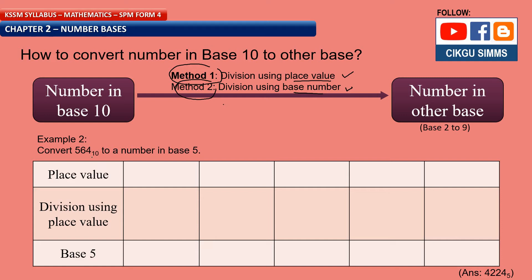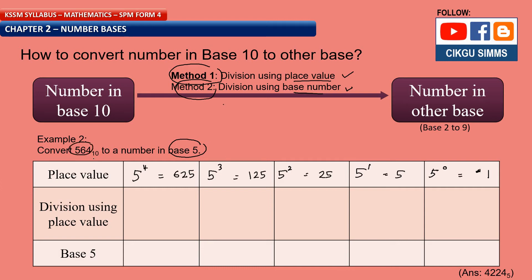For method 1, we need to write the place values first. We want to convert to base 5, so we write the place values: 5 to the power of 0 is 1, 5 to the power of 1 is 5, 5 to the power of 2 is 25, 5 to the power of 3 is 125, 5 to the power of 4 is 625. Our number is 564 base 10. Since 625 is higher than 564, we skip it, and start from 125 which is smaller.